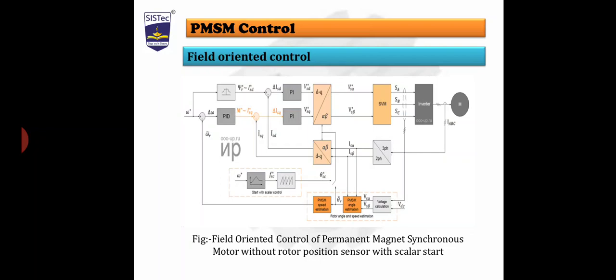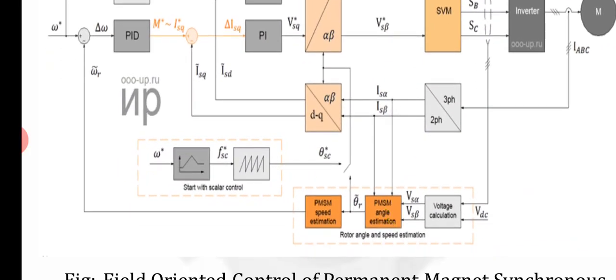This is the diagram for field oriented control of permanent magnet synchronous motor without rotor position sensor with scalar start. In this technique or scheme, PMSM speed estimation, PMSM angle estimation, and voltage calculation - these three blocks...